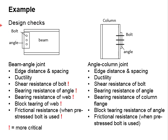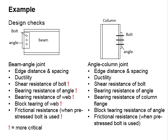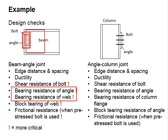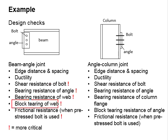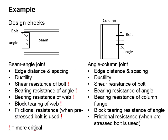Next, look into the design check for the beam and angle joint. Due to the existence of the bolts, you need to check the distance and spacing of the bolt holes. As it involves beam-to-column connections, check for ductility. You also need to check the shear resistance of the bolts, the bearing resistance of the angle, the bearing resistance of the web, and block tearing of the web. Since standard bolts are used, friction resistance is not required.